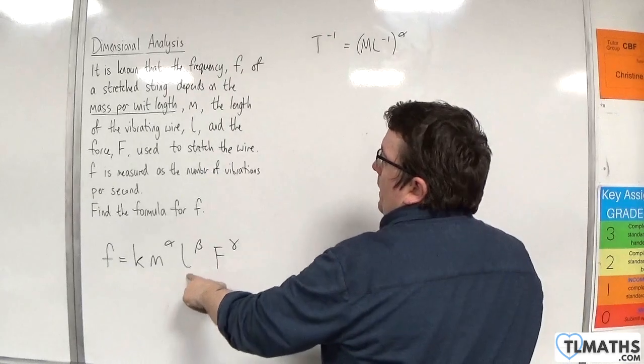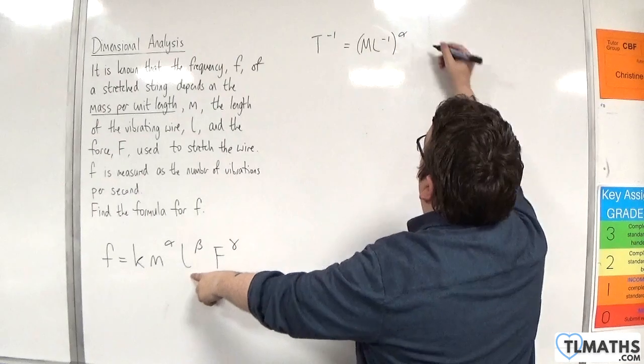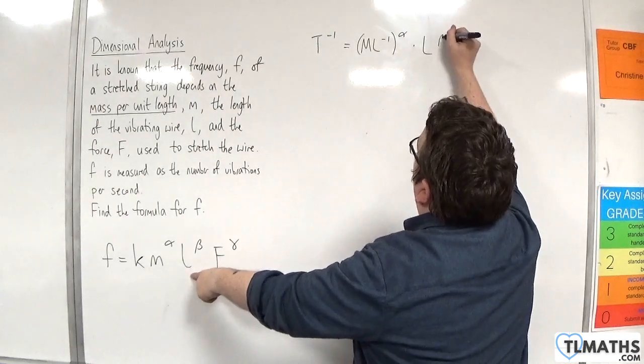Then we've got l. That's the length of the vibrating wire. So that's just a length, so l to the beta.